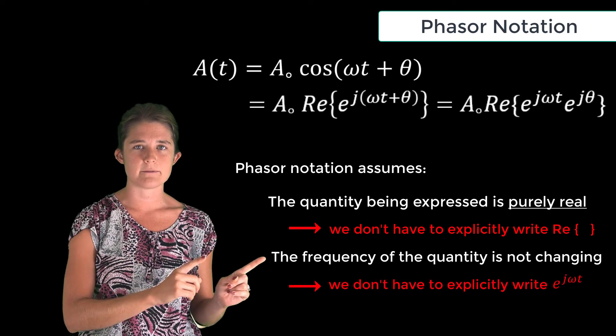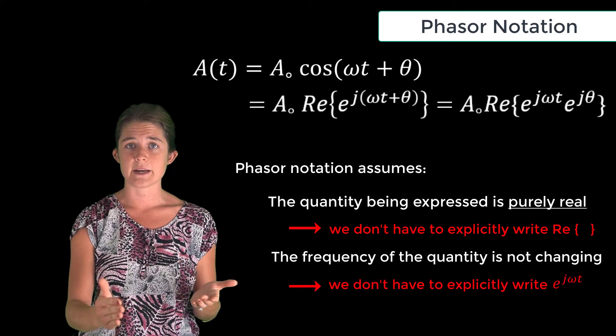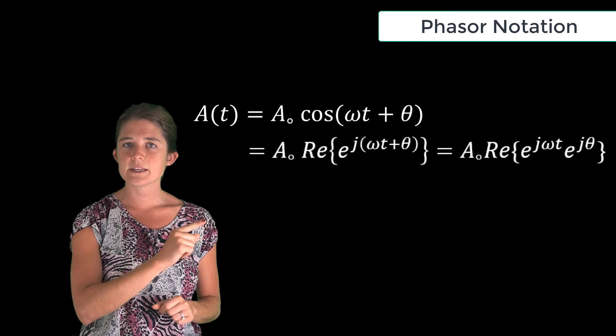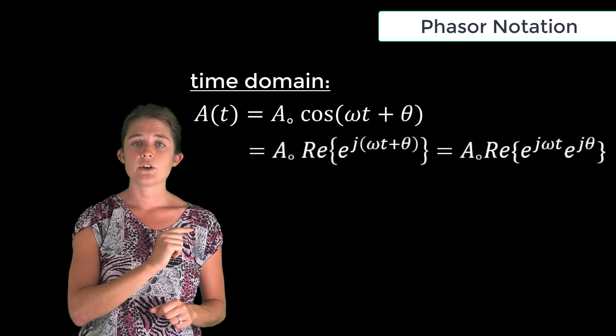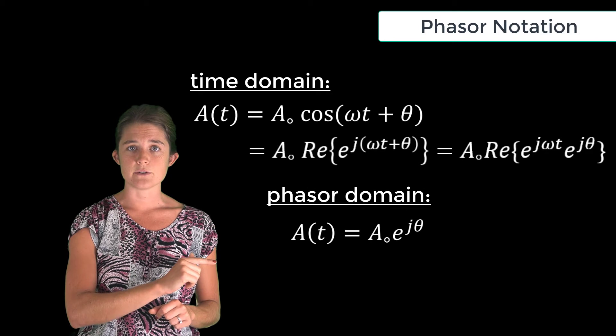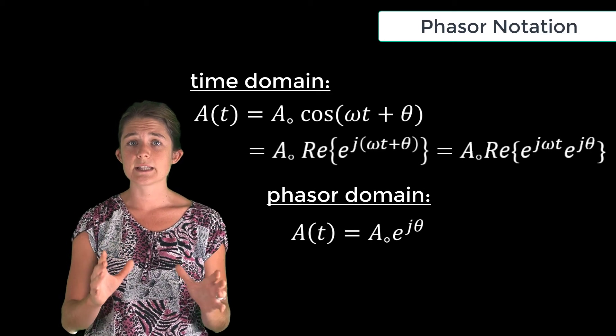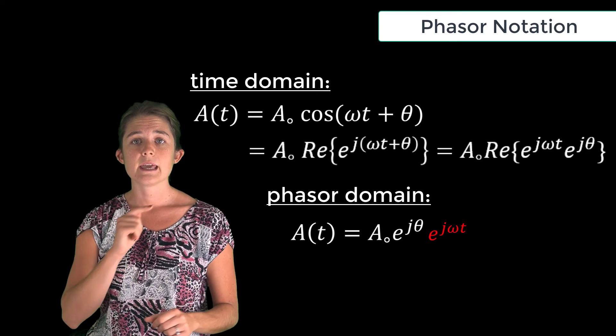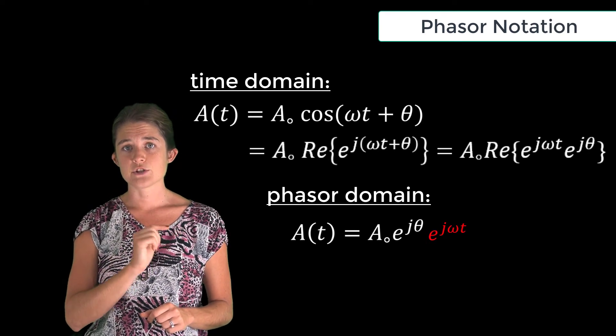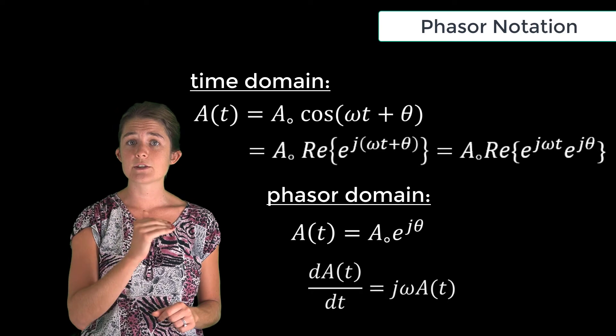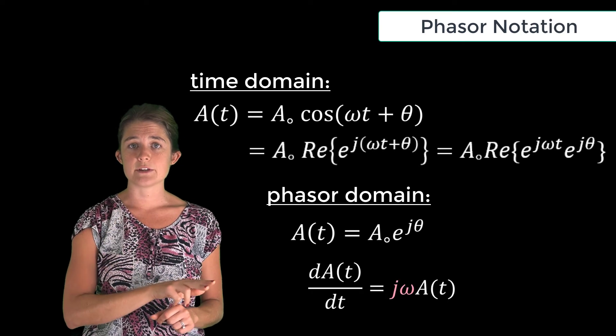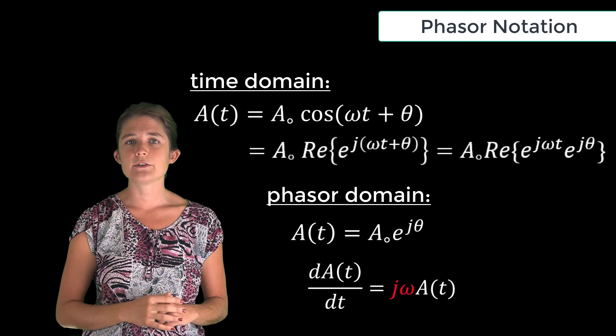So if you're given this quantity in the time domain, you can write it like this in phasor notation. It's important to note that even though we aren't explicitly writing the frequency term e to the j omega t, it is still there. So if you take the time derivative of a phasor quantity, you have to bring down a j omega.